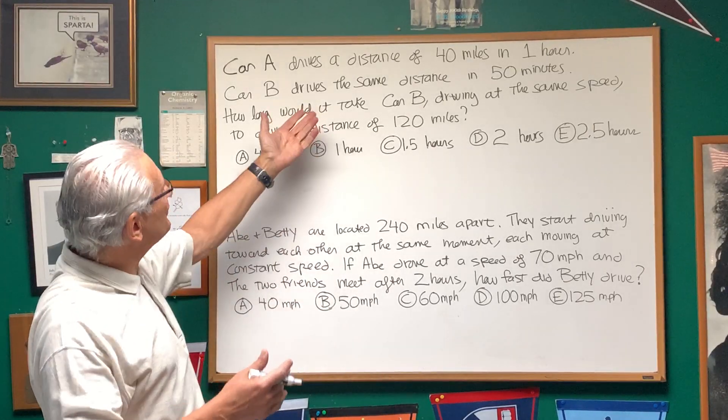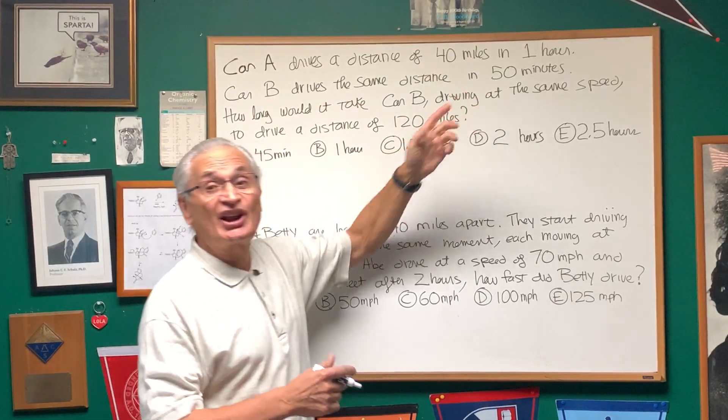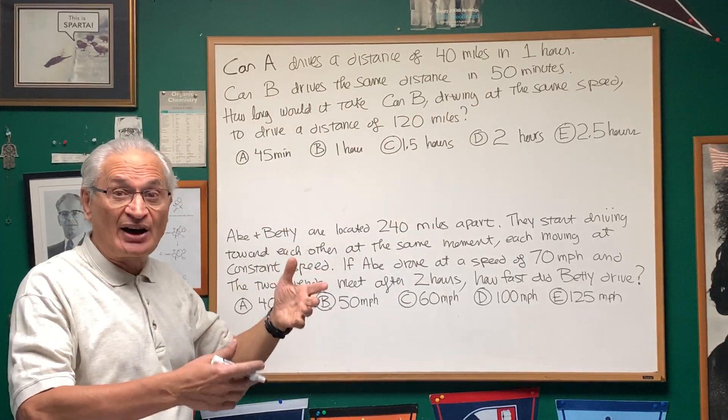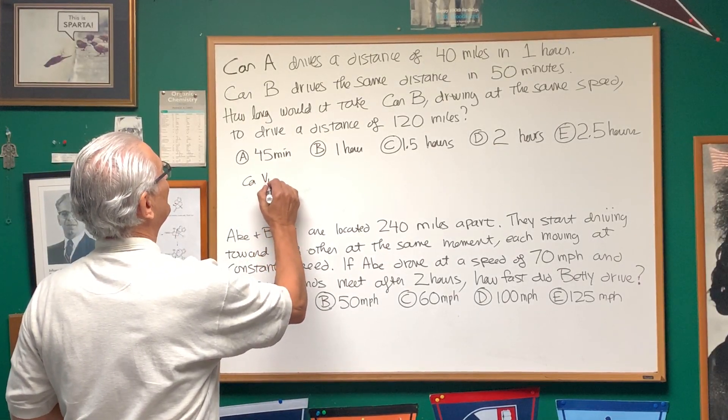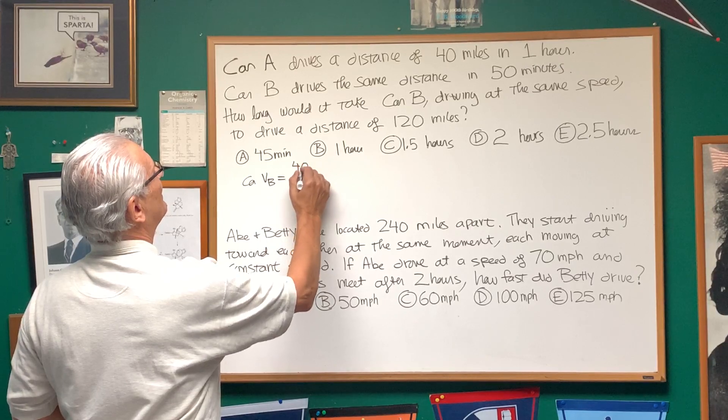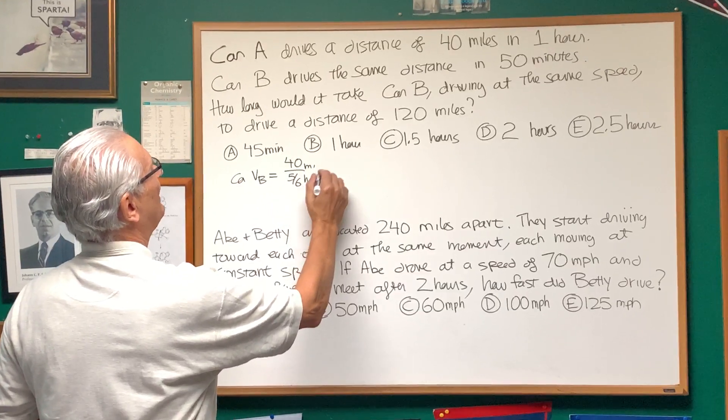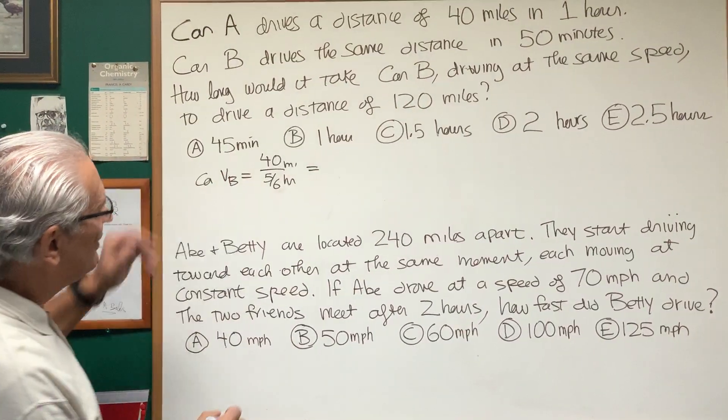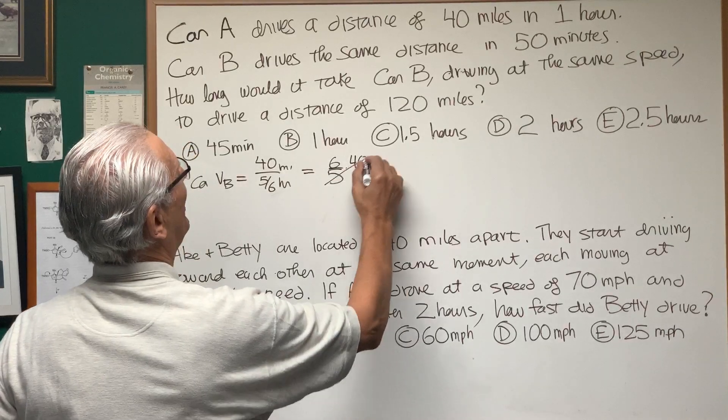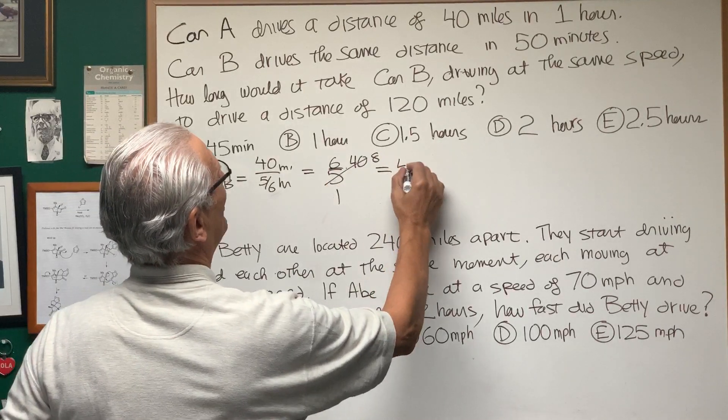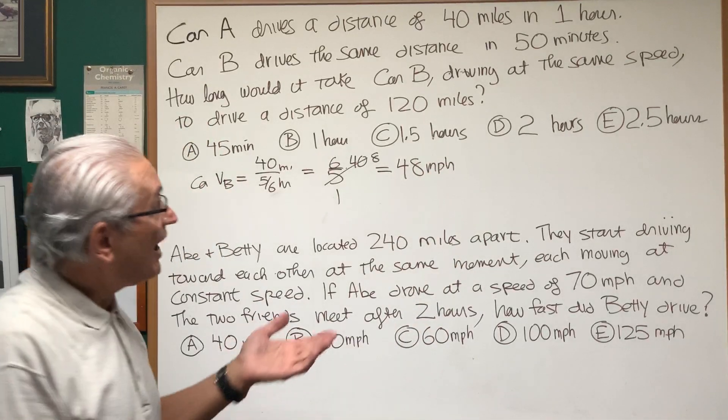We could compute the speed of Car B, because Car B is obviously going faster. It covers the same distance in only 50 minutes, which is five-sixths of an hour. So we have Car B, the velocity of Car B, is equal to 40 miles in only five-sixths of an hour. And if we simplify that, six-fifths times 40, 5 goes into 8, 6 eighths are 48 miles per hour.